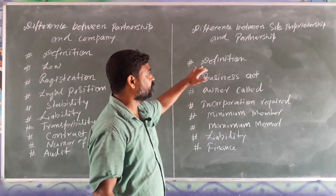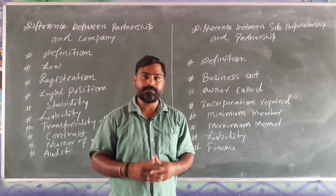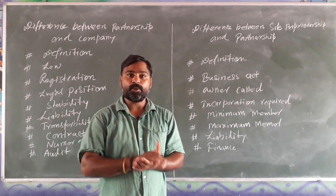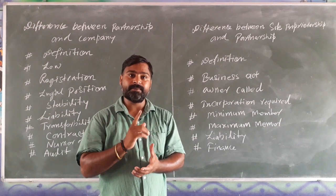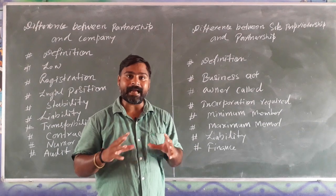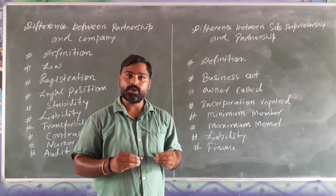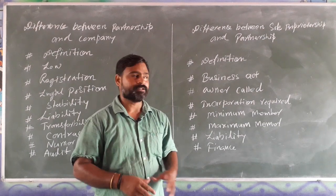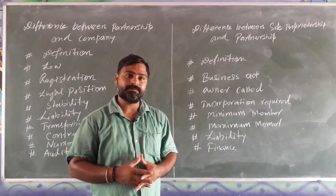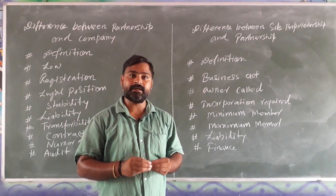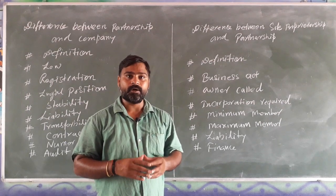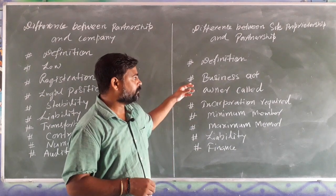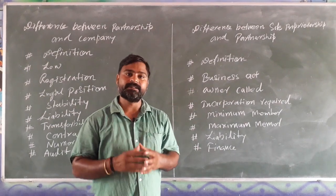The first point is definition. The definition of sole proprietor is: a sole proprietor is a type of business where one person controls the entire activity of the business, does not share profit with anyone, and performs all the activities of business. Whereas partnership is an agreement between the partners to perform a lawful business and share profit.